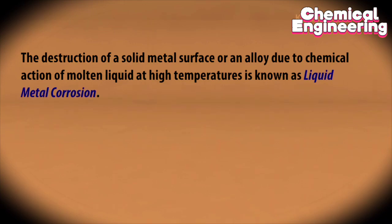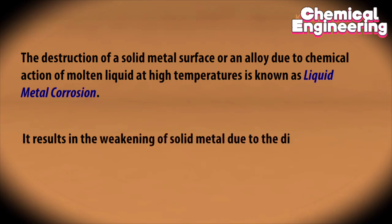Liquid metal corrosion: The destruction of a solid metal surface or an alloy due to chemical action of molten liquid at high temperatures is known as liquid metal corrosion. It results in the weakening of solid metal due to the dissolution of solid metal into liquid metal.